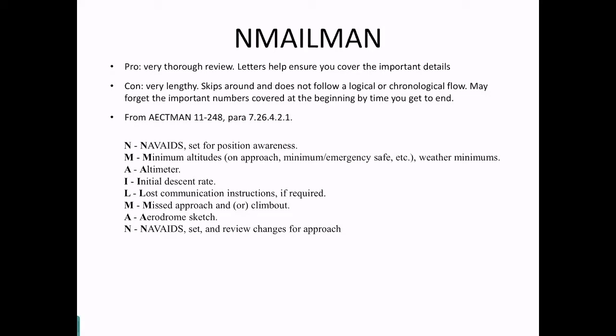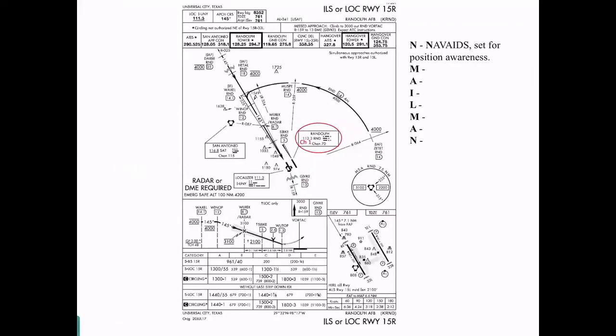So let's take a look at how we would do an N-MAILMAN. So for our example, let's use the ILS or Localizer 1-5-Right here at Randolph. So if I was to review this, I'm still out in my MOA, I'm doing my FENCE-Out, and under review the approach, I say, okay, I'm going to review the approach for the ILS or Localizer 1-5-Right at Randolph. So the NAVAIDs set for my positional awareness. So for my initial recovery here, I'm going to want to be on the Randolph Vortac, which is Channel 1, 112.3. It may also include how you're going to set up your GPS to also use positional awareness and get some range and bearing from it. Either set it at the Vortac or the Final Approach Fix, or maybe you're using that as part of the augur ILS to get yourself the must-be.